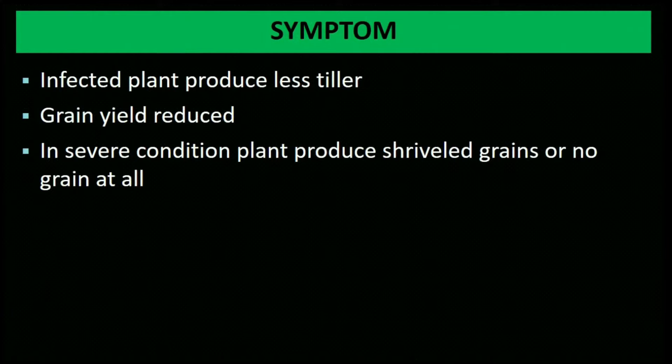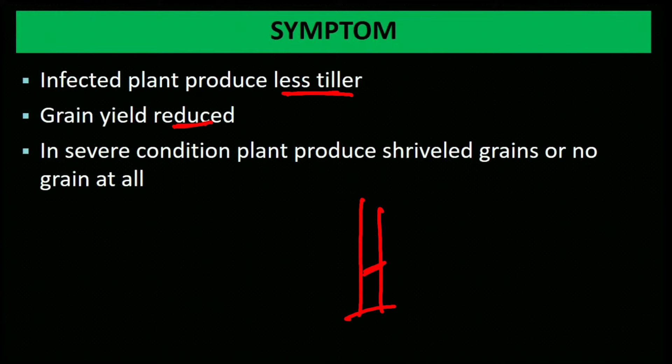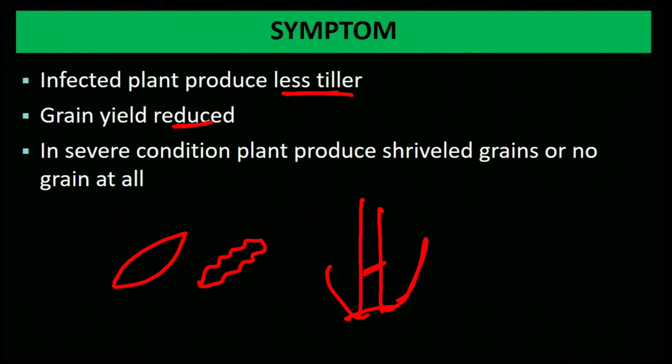Infected plants produce fewer tillers; grain yield is also reduced. In severe condition, plants produce shriveled grain or no grain at all, because the plant's nutrition is not properly available.